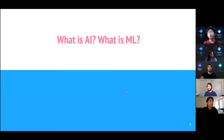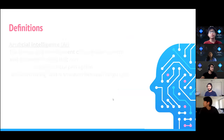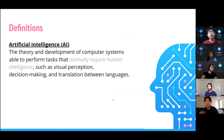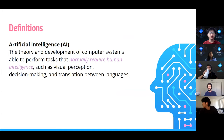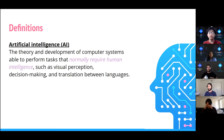We're first going to talk about what is artificial intelligence and what is machine learning. We have two definitions for you all. The first definition is for artificial intelligence, or AI: it is the theory and development of computer systems able to perform tasks that normally require human intelligence, such as visual perception, decision making, and translation between languages.